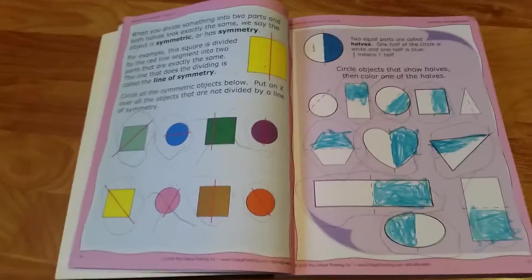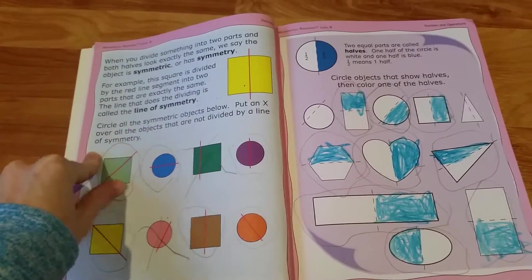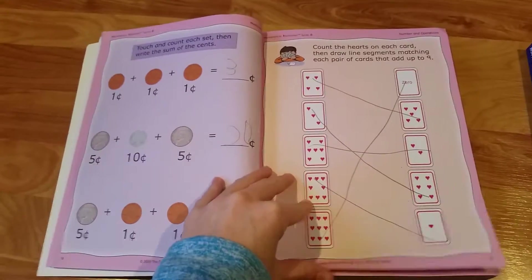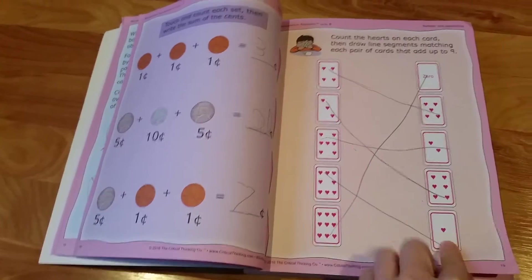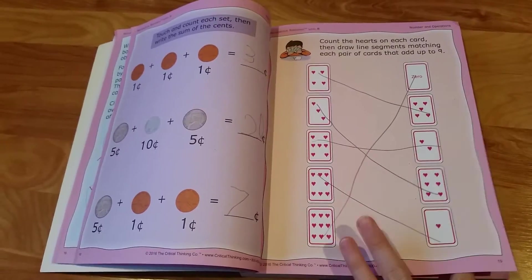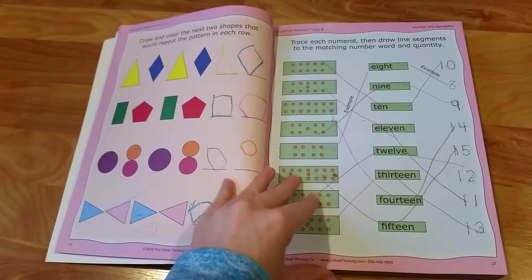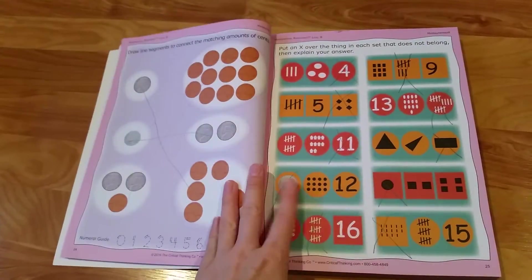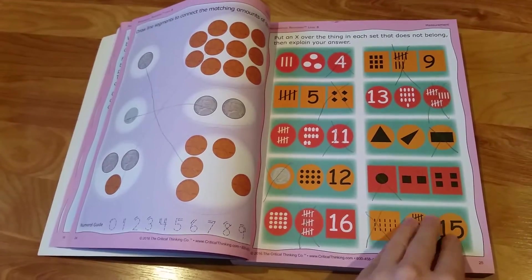When there is a new concept that isn't something that's pretty self-explanatory, it does have more instructions. Like here, talking about symmetry, and then going back and doing some more similar activities. This time adding up the hearts to add up to nine on the two different cards. Completing patterns, so this is what we've done so far.